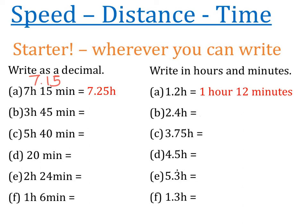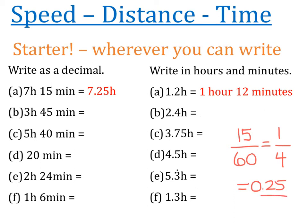If they told us something took 7 hours and 15 minutes, the most common thing for people to say is that the time is 7.15. But 7.15 does not mean 7 hours and 15 minutes - it means something different. What 7 hours and 15 minutes actually means is 7.25 hours. Where the 0.25 came from is 15 minutes out of 60 minutes in 1 hour. 15 and 60 both have 15 in common, so we divide to get 1 and 4 - one quarter, which is 0.25.